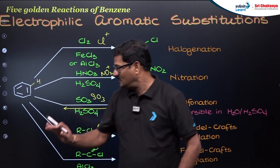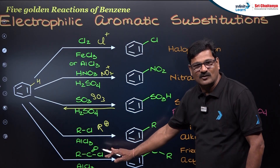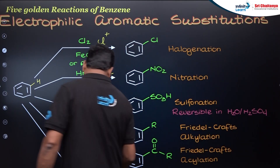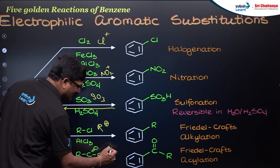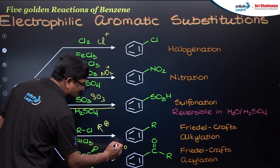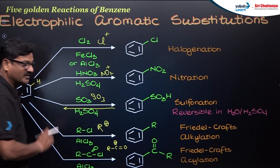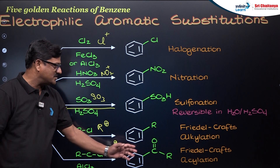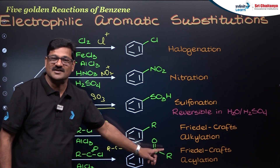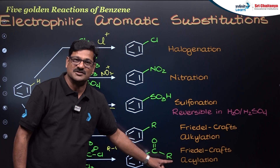When benzene is treated with acyl chloride, you see the formation of an acylium ion. This acylium ion is resonance stabilized, so there is no rearrangement. Acylated benzene is formed, and this reaction is called Friedel-Crafts acylation.